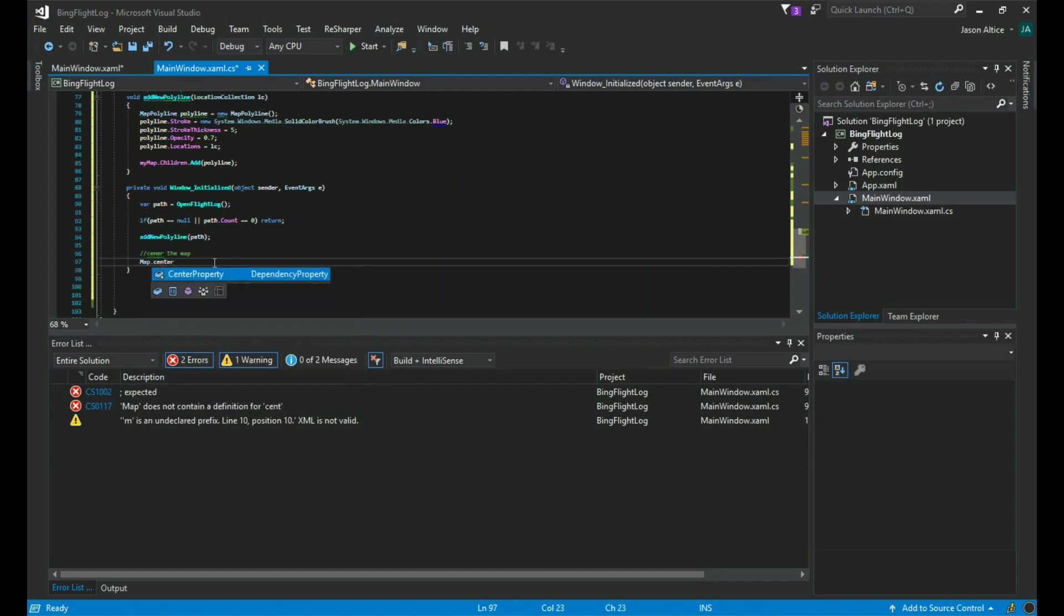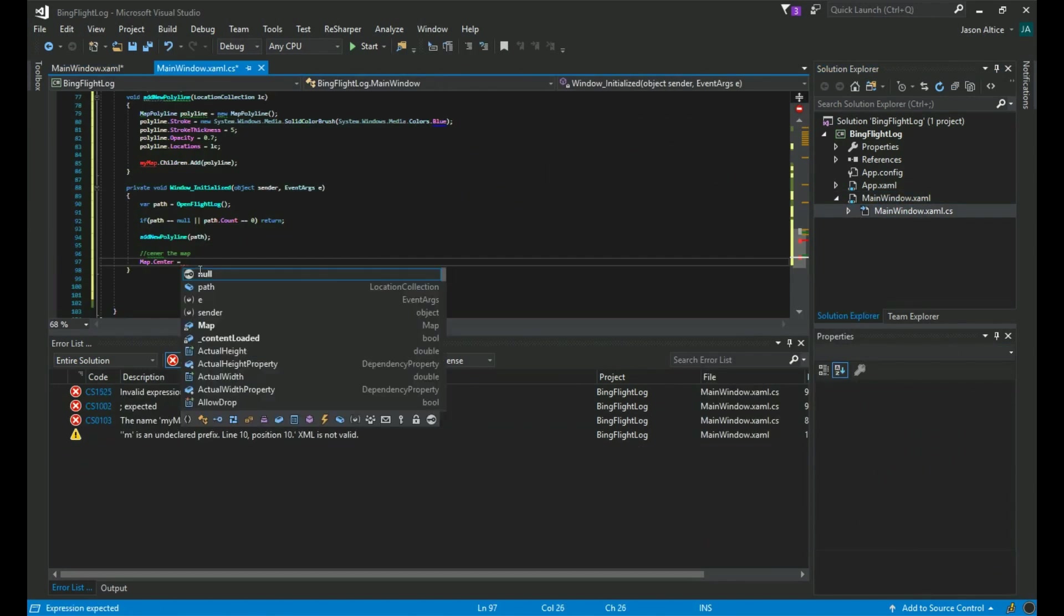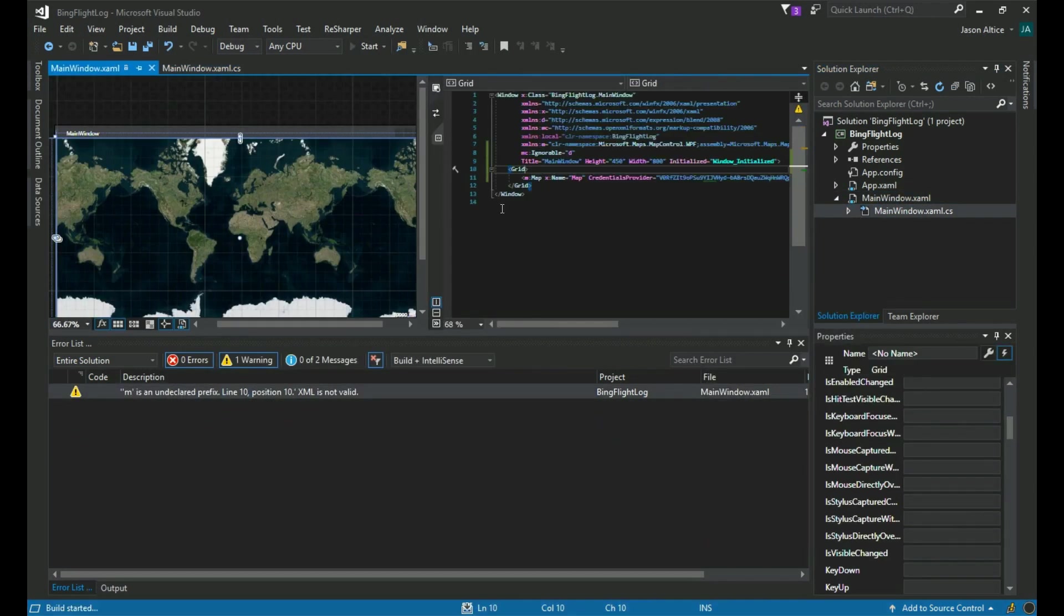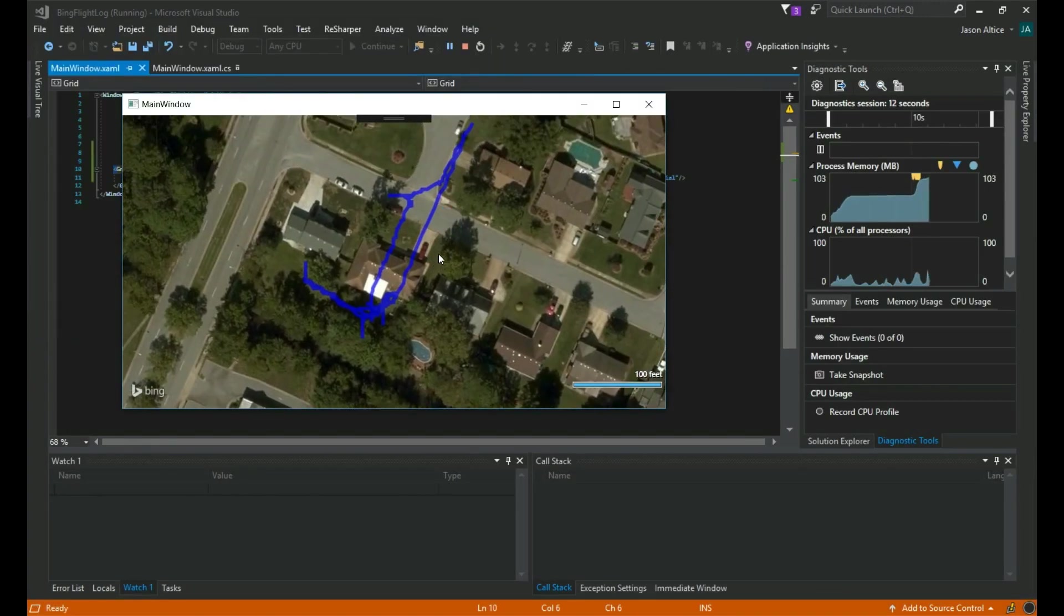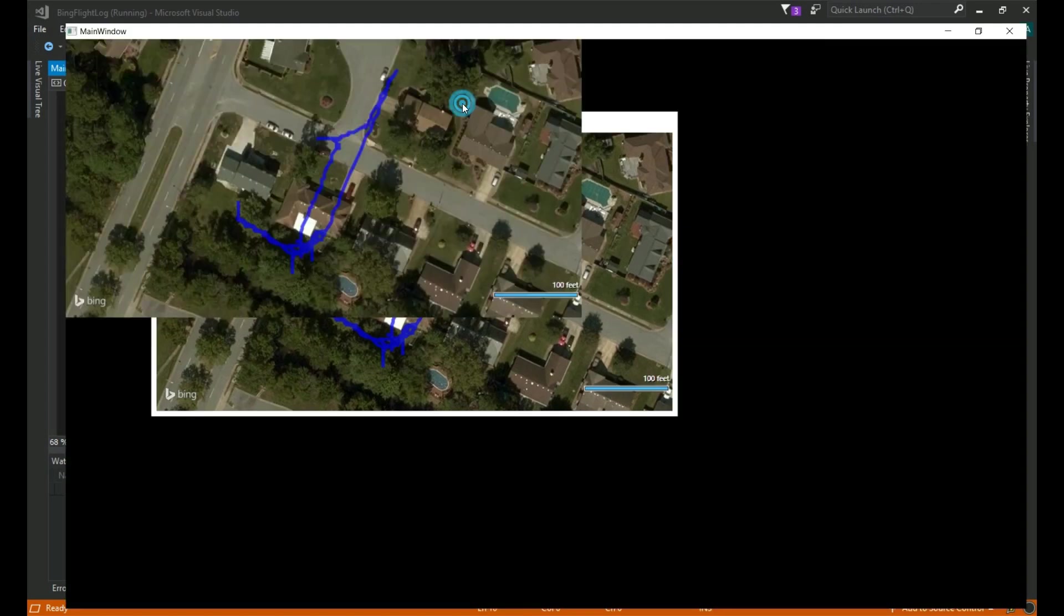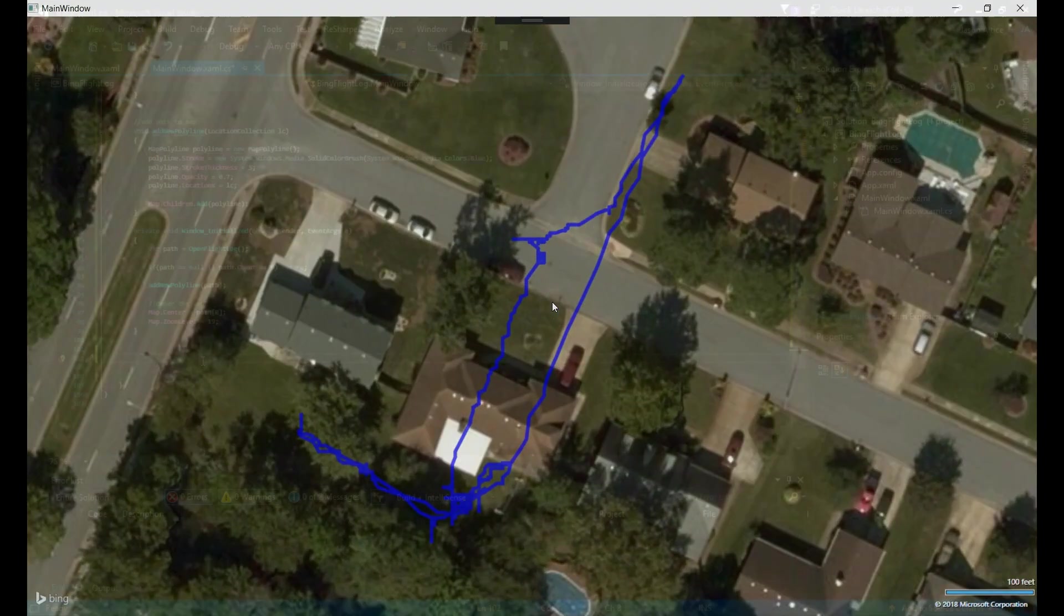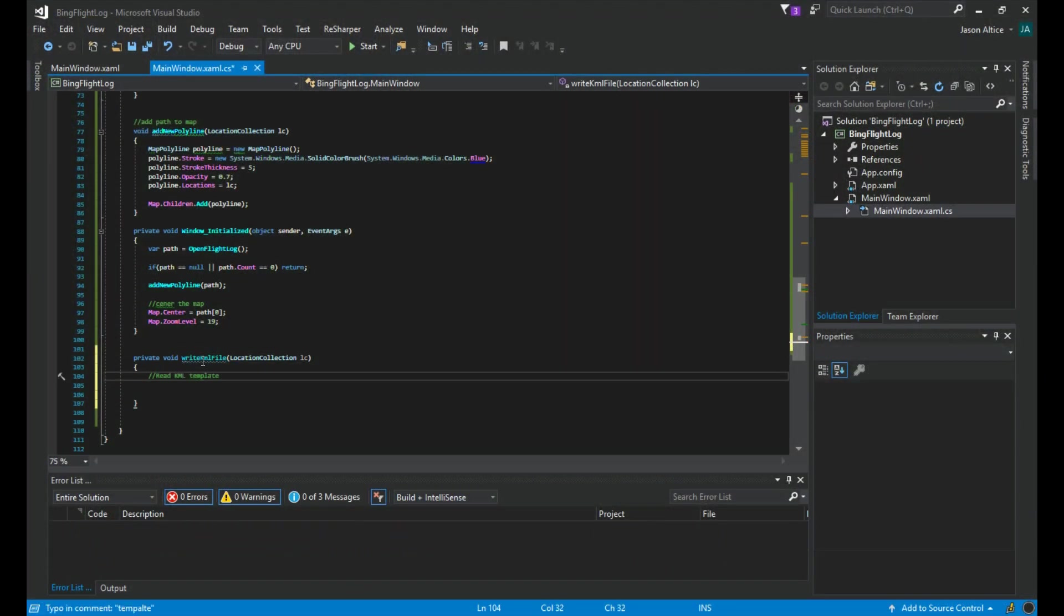This is the Bing map code that I promised. If you want to make a custom app to see the flight path of your drone, Microsoft Bing makes it really easy to do this. The full version of this tutorial is about 15 minutes and is in the description below. But as you can see, it's pretty cool for less than 100 lines of code.